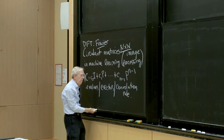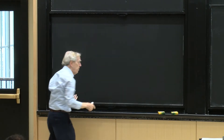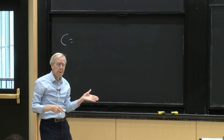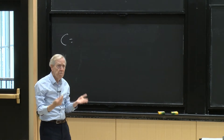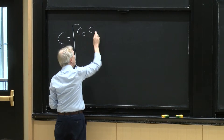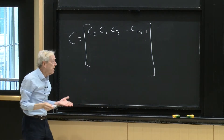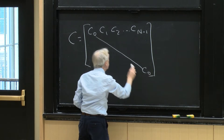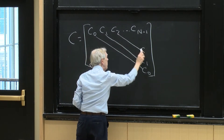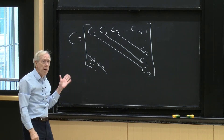Circulant matrices are connected with finite-size matrices — matrices of size n, so our circulant matrices will be n by n. These matrices C are defined by not n² entries, only n. If you tell me just the first row of the matrix — C₀, C₁, C₂ through Cₙ₋₁ — that's all I need to know, because these diagonals are constant. So n numbers and not n².